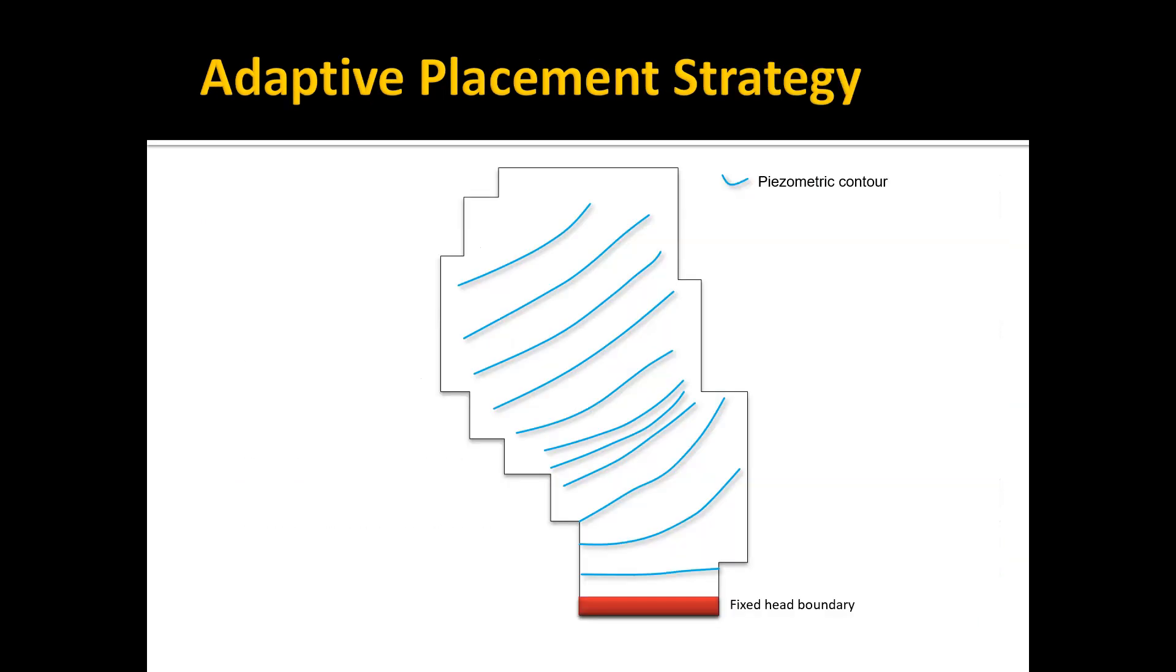To illustrate the adaptive placement strategy, let's suppose we have a model like this. By the way, this example came from John Doherty, the author of PEST. The blue lines represent piezometric contours. We have a fixed head boundary on the bottom; the other boundaries are no-flow boundaries. These are basically an estimated distribution of the contours based on interpolating our observation wells.